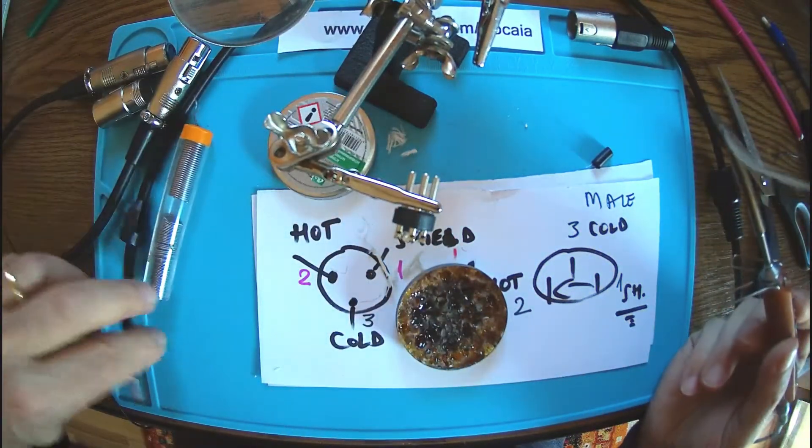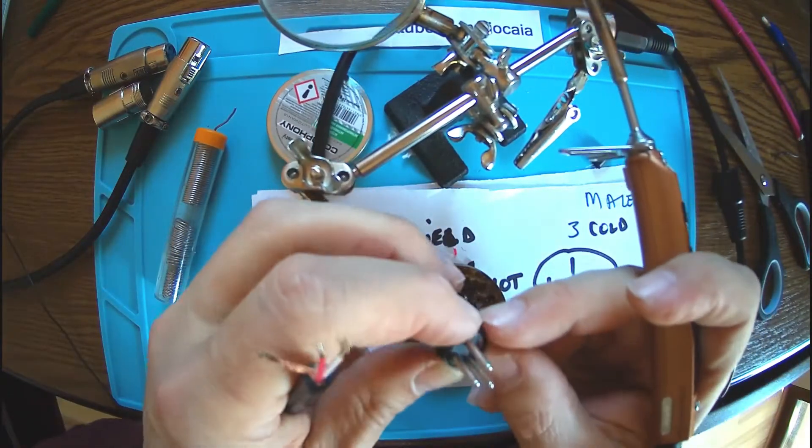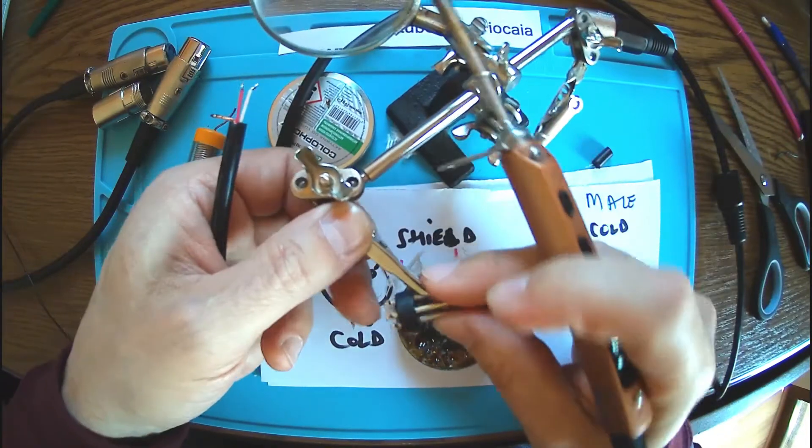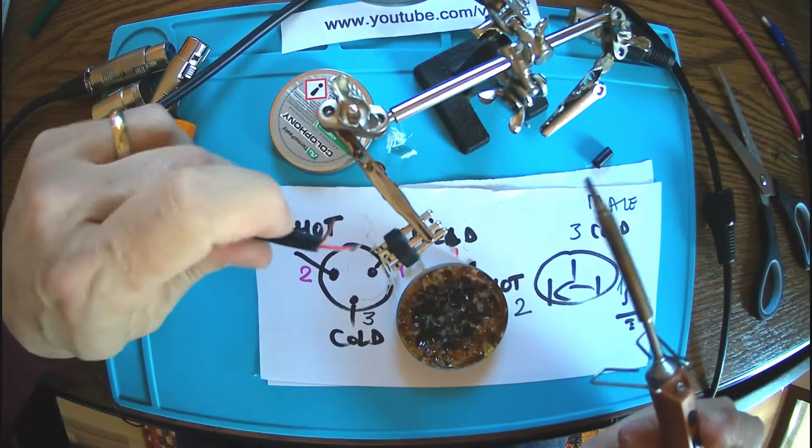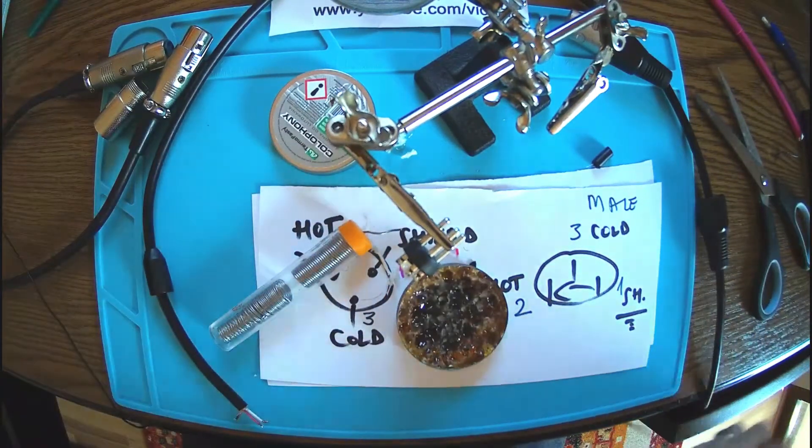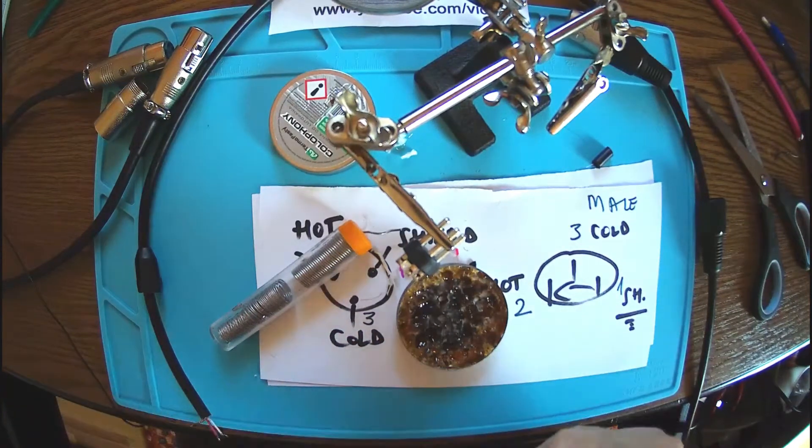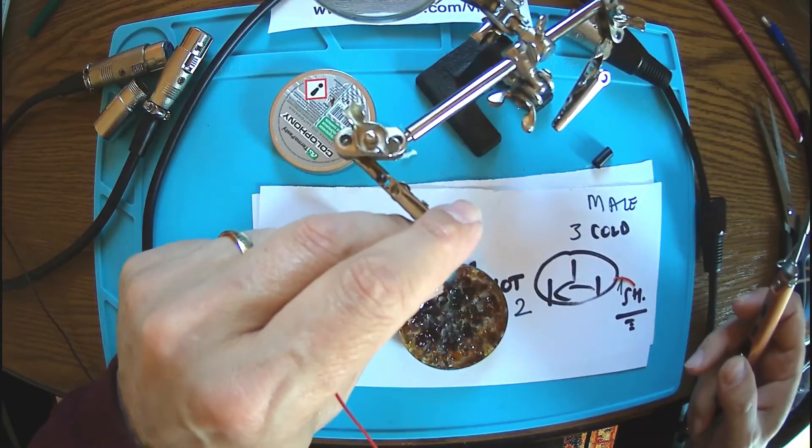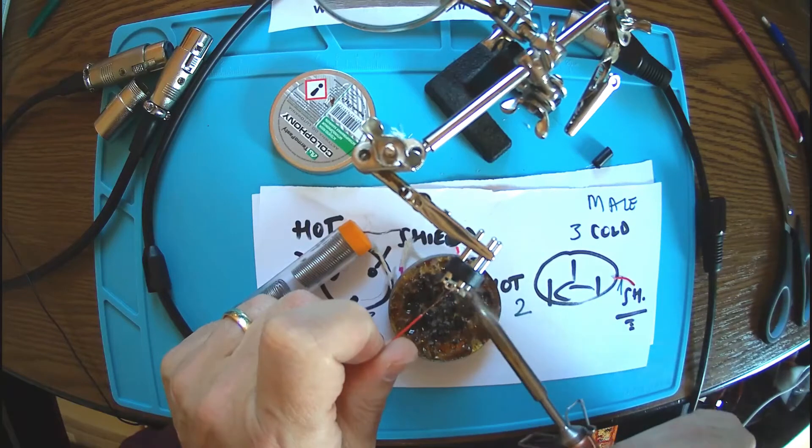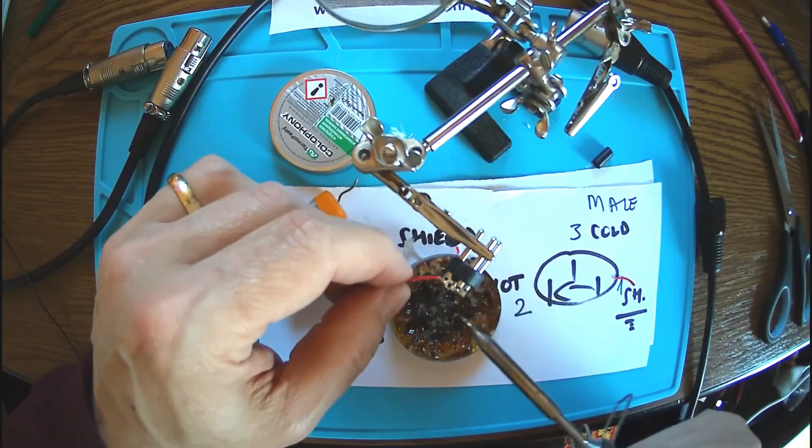Let's check for number one. You see we have numbers over here: one, three, and two. So number one is this one here. I said on number one we have the shield. But before anything else, let me have some connection to the ground down here. This will be the ground of the case, so this one also goes to number one.